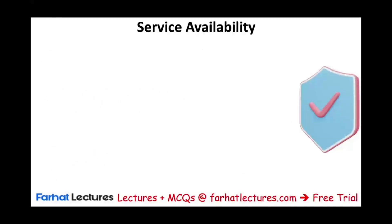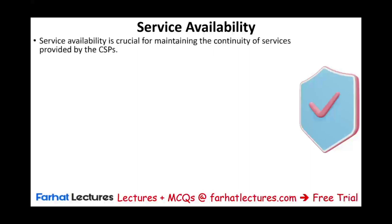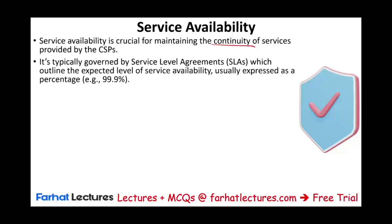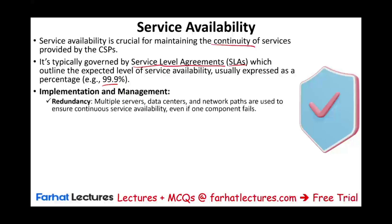Service availability is crucial for maintaining the continuity of services provided by cloud service providers. If your information is on their system, you rely on their availability for your own. This is typically governed by a service level agreement (SLA), which outlines the expected level of service availability — usually expressed as 99.99%. They implement redundancy systems with multiple servers so that if one fails, information is available on others.